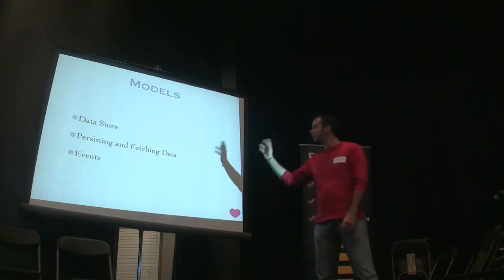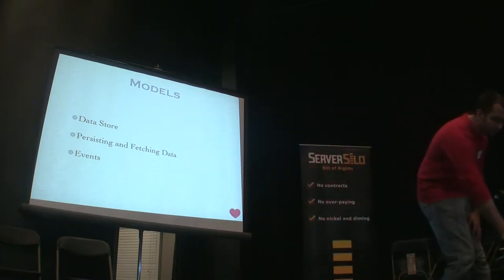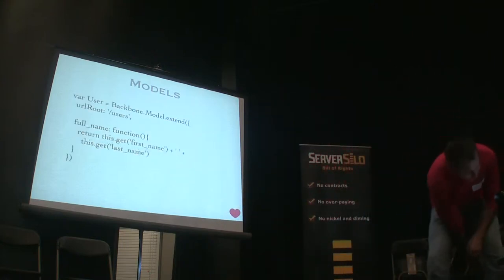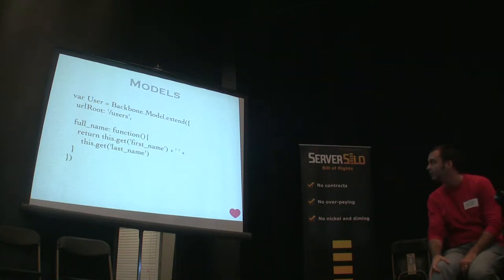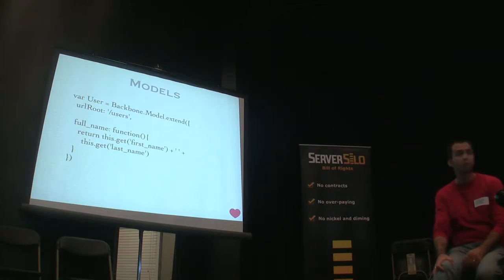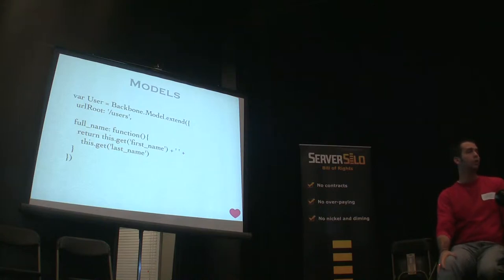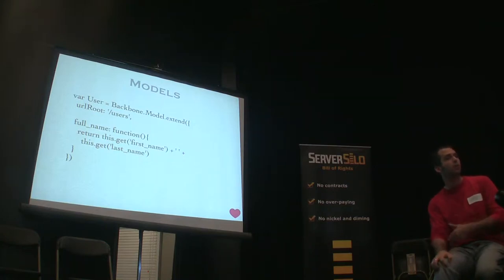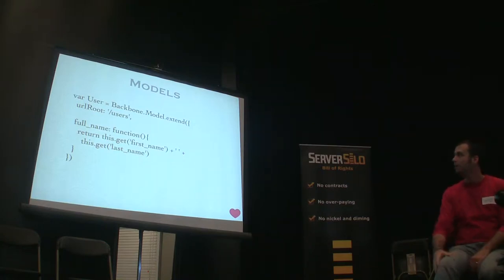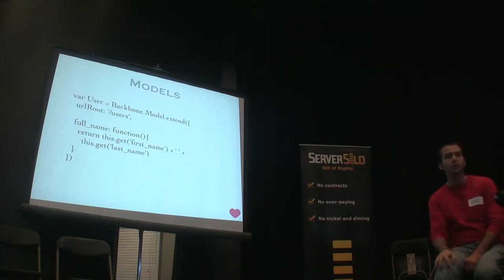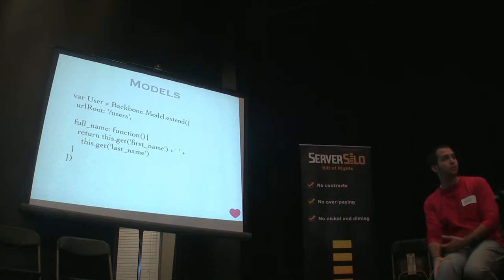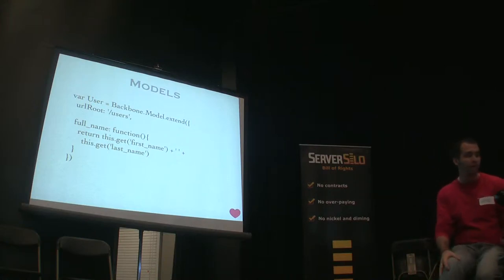So models — data stores, persisting, and events. Here we're creating a user object by extending the Backbone Model object, and we give it a URL route so it knows where to get the data from and where to put the data. You can also define custom functions in there however you want. In this case for a user, I have a full name function so I can get that whenever I need it.